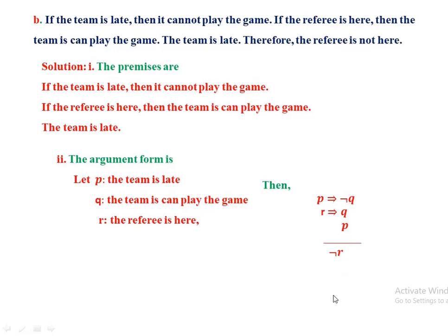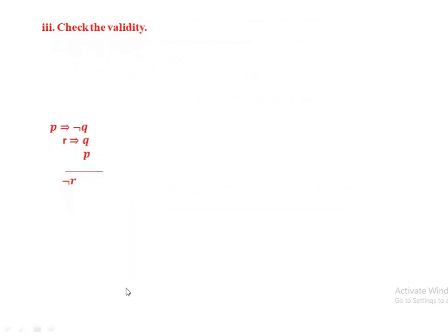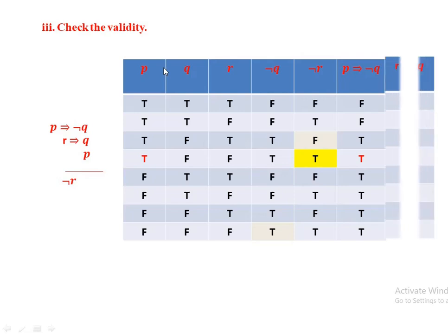We check validity by constructing the truth table. With three propositions P, Q, R there are eight possible combinations. Negation Q based on the values of Q becomes: false, false, true, true, false, false, true, true. Negation R based on the values of R becomes: false, true, false, true, false, true, false, true.